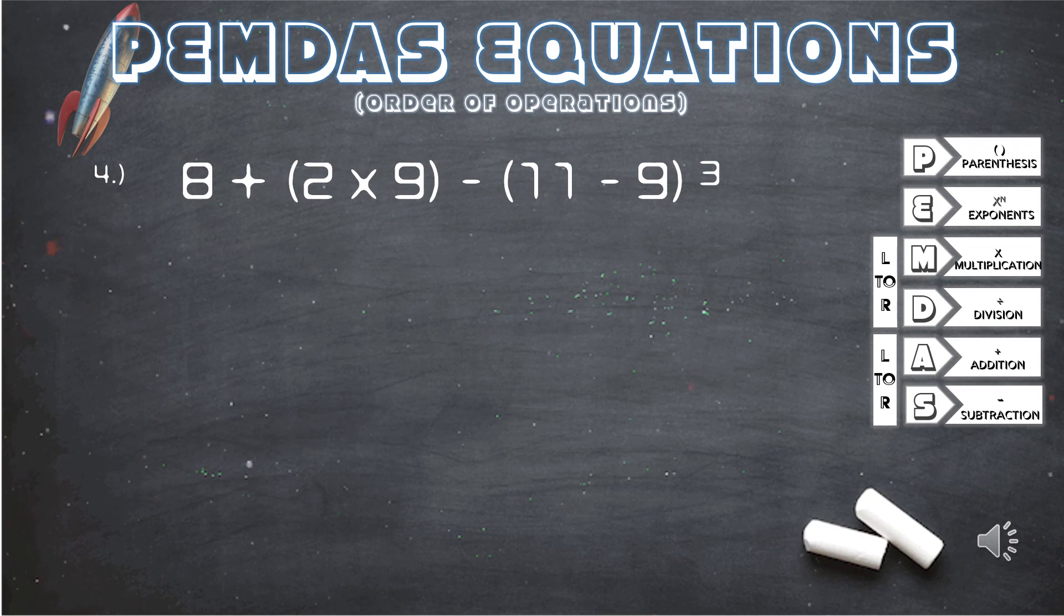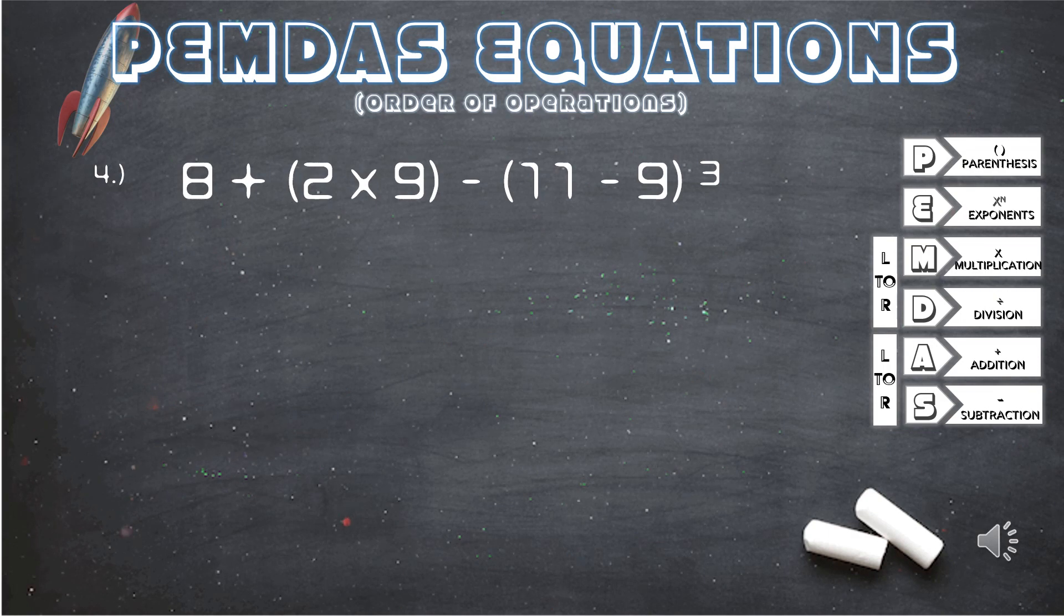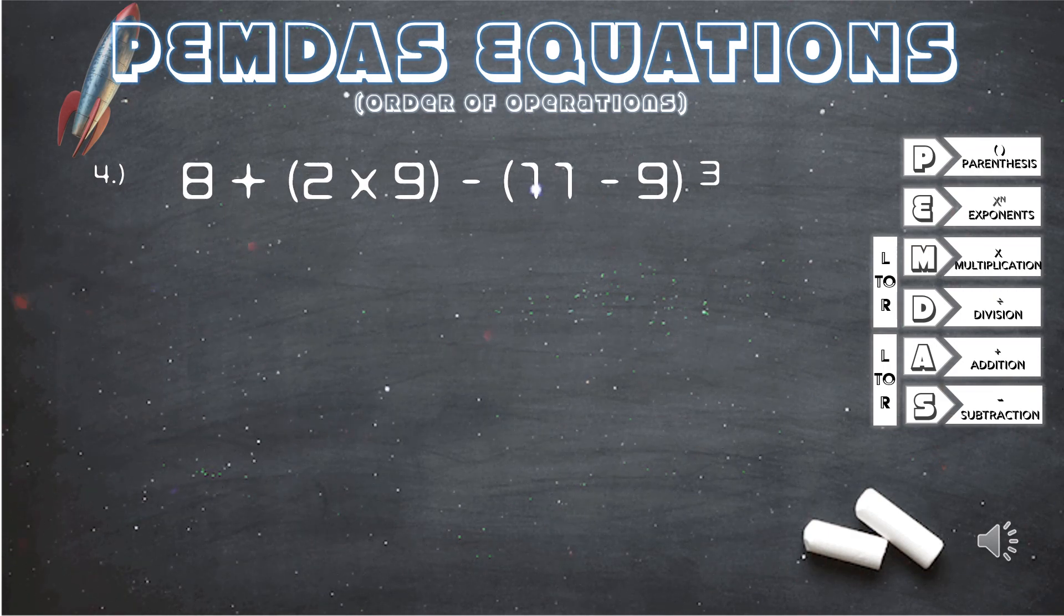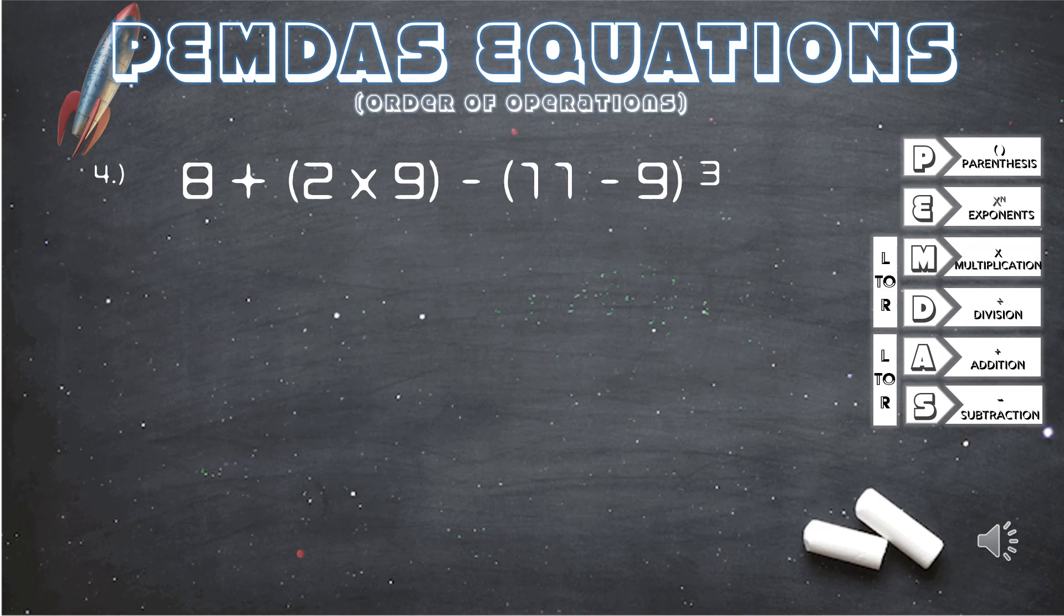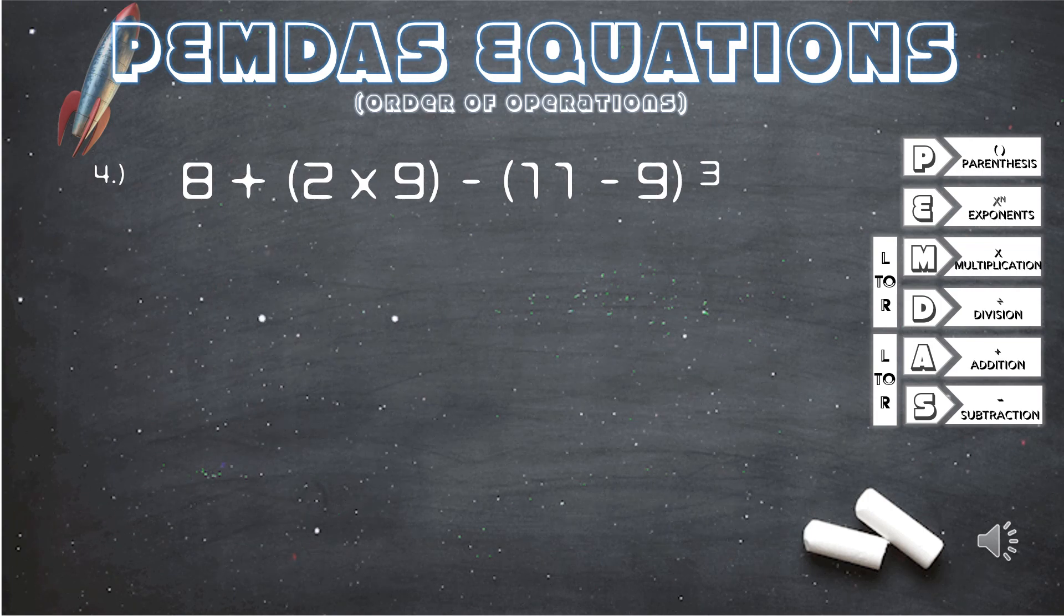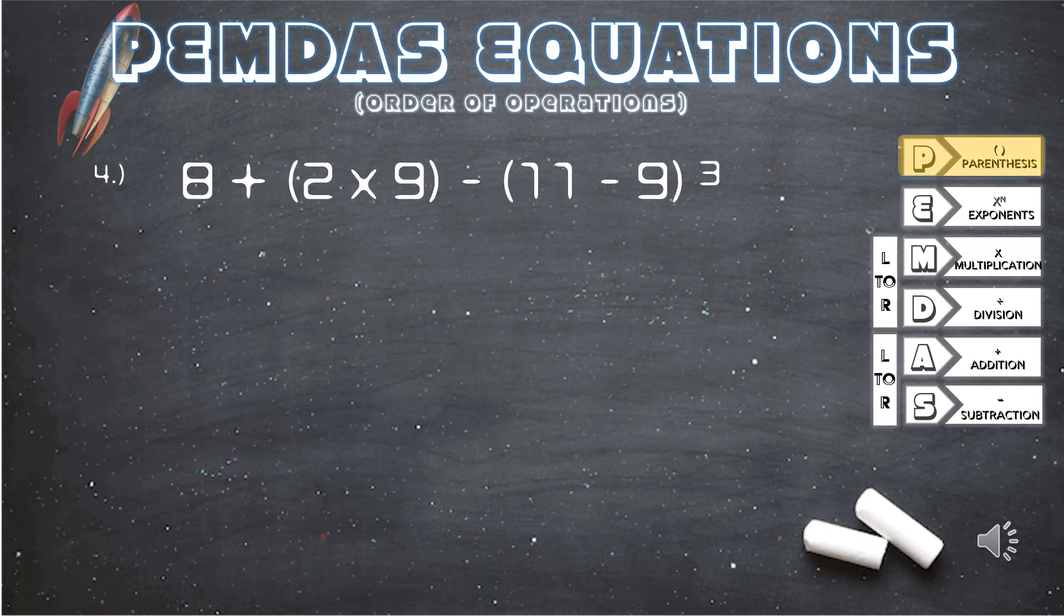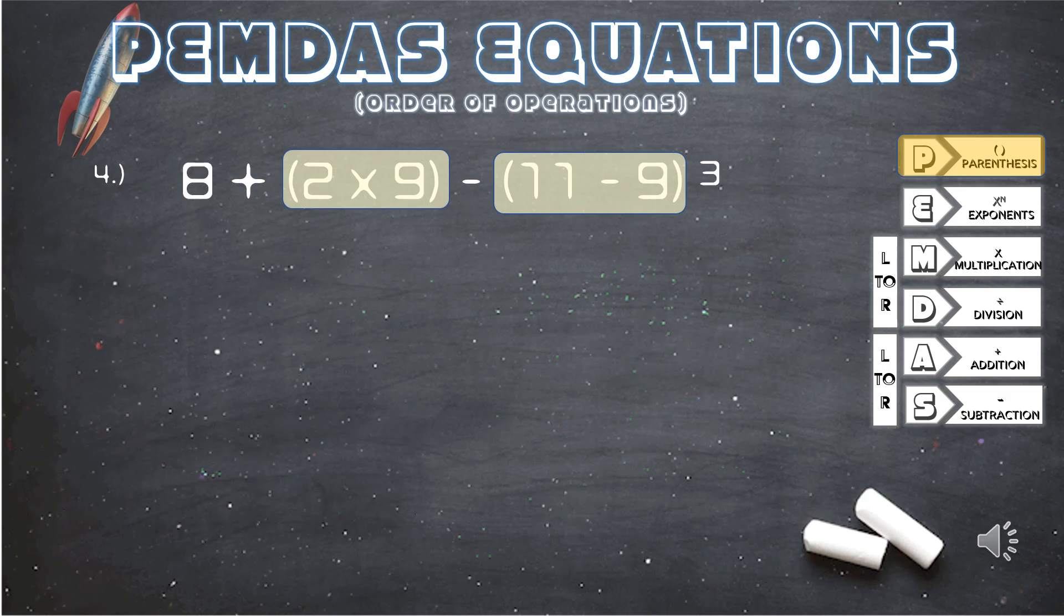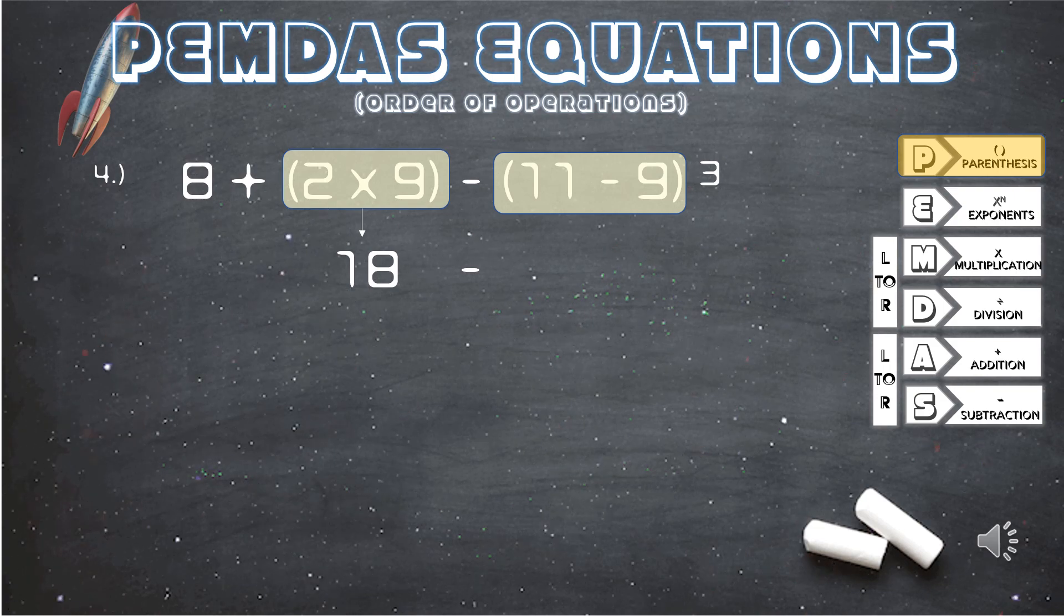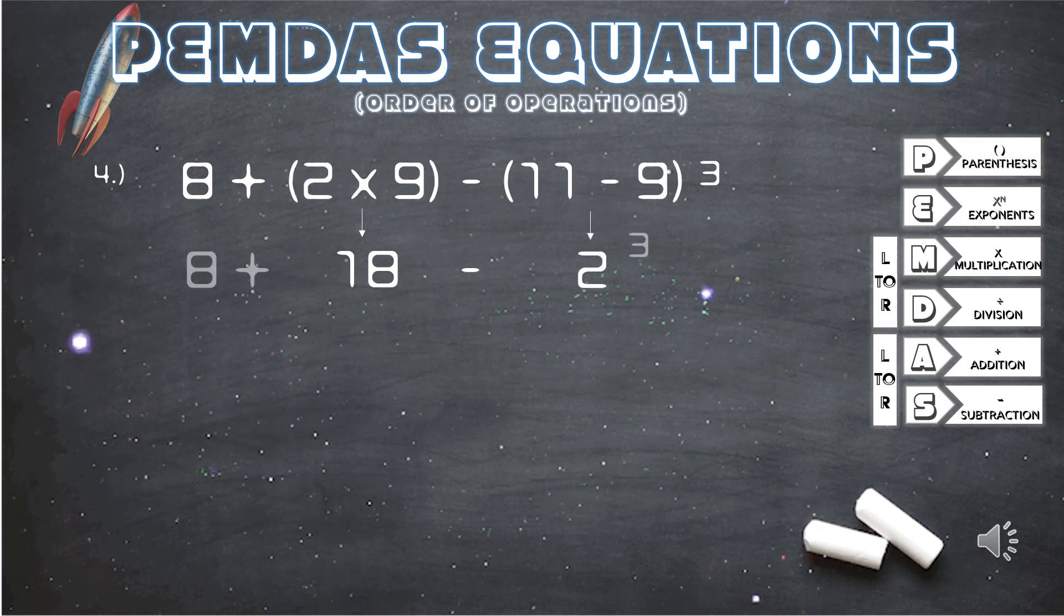Question 4. 8 plus parentheses 2 times 9 parentheses minus parentheses 11 minus 9 parentheses to the third power. First, we will solve what is in the parentheses. 2 times 9 equals 18, and 11 minus 9 equals 2. We bring down the rest of the equation.